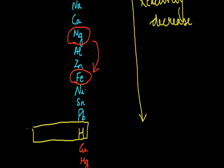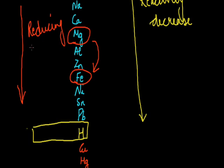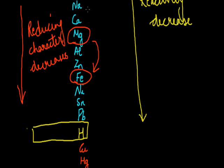When the metal is more reactive, it will lose electrons easily and so it will be a good reducing agent. The reducing character also decreases down the series. We can see that sodium has a good reducing power than lead. Sodium and calcium have a very nearby difference in their reducing nature, so you can consider that sodium is more reactive than calcium.